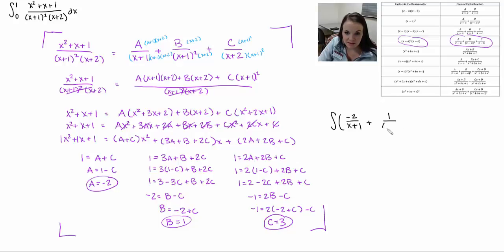My b is 1. So that guy looks like this. Whoops. The square goes on the outside. Be careful of that. And then I have my c, which is 3, over x plus 2.